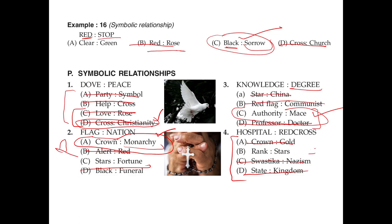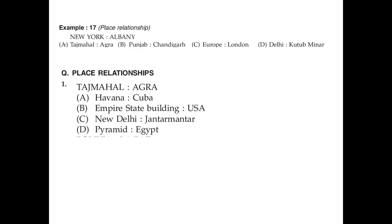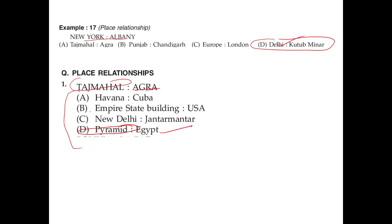Knowledge and degree: knowledge is not something we can feel or touch — degree is something we can see. China is not something we can touch as a non-visualized object. When someone is authoritative, they have staff or an office under their control — so once you become authoritative you get an office, making C the right answer. Cross resembles a hospital symbol. State and kingdom are similar. A swastika is a symbol but the sequence is not right. Crown and goal have no symbolic relationship. Taj Mahal is one of the seven wonders of the world, as is the Pyramid in Egypt.